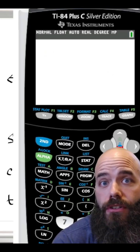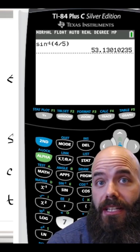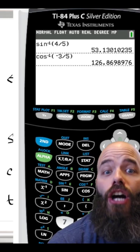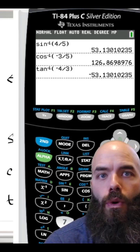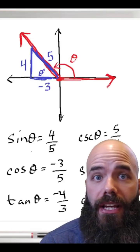me theta prime. We do the inverse sine of four-fifths, we get about 53.1 degrees. If we do the inverse cosine of negative three-fifths, we get about 126.9 degrees. Which one of these is theta, which one of these is theta prime? I know theta, which is